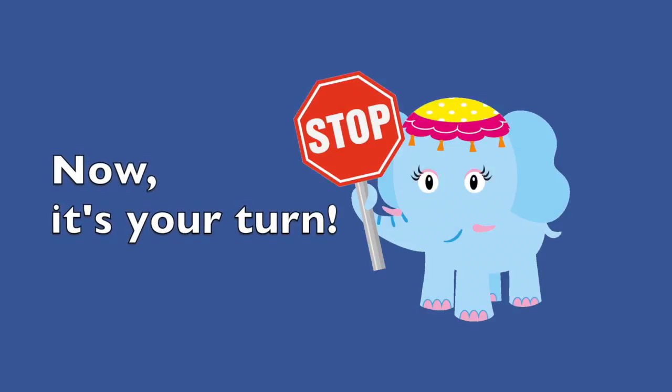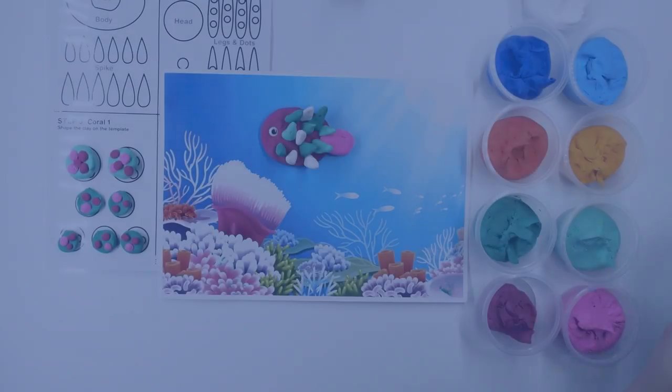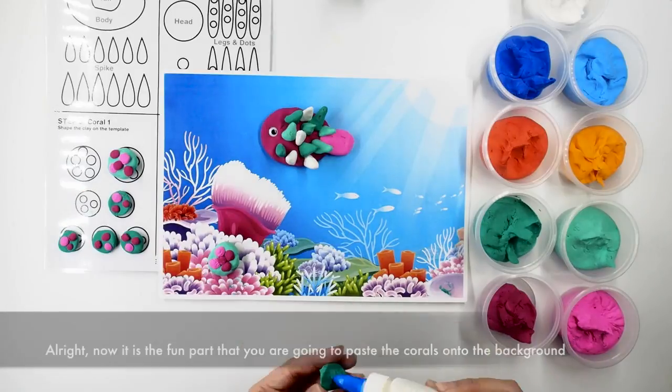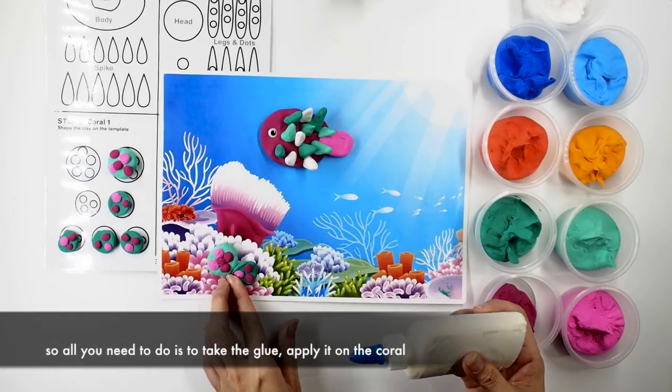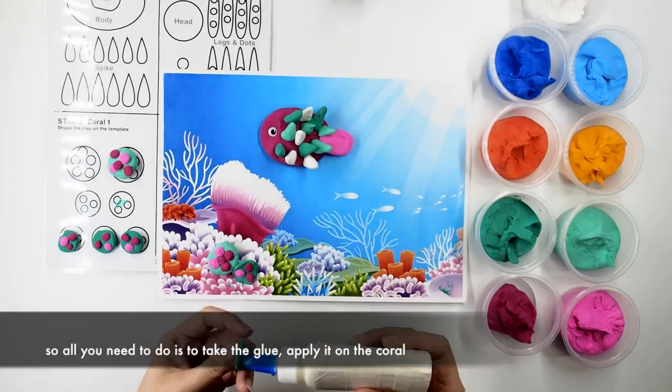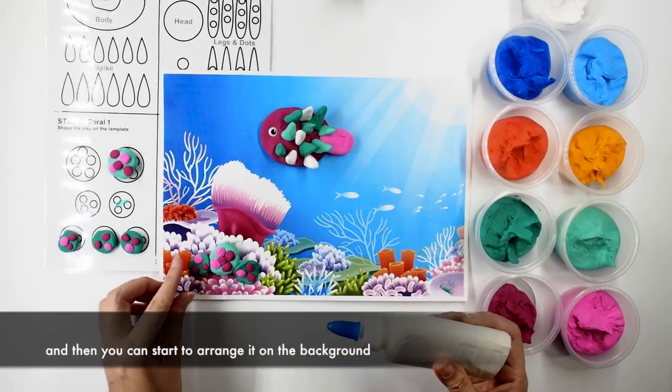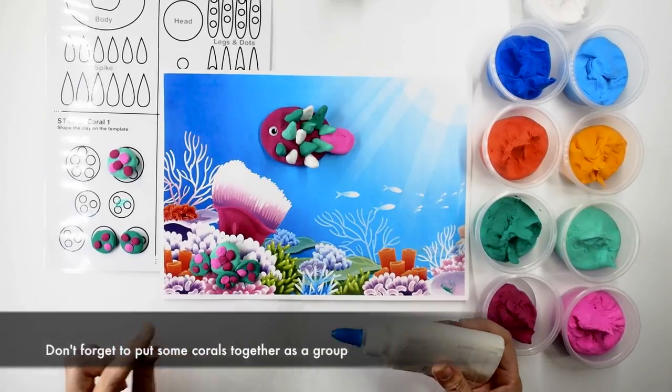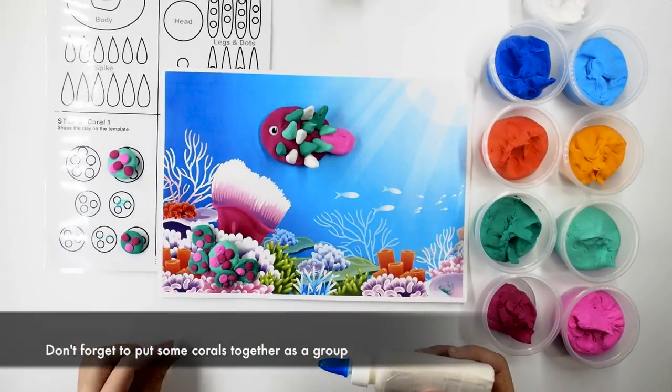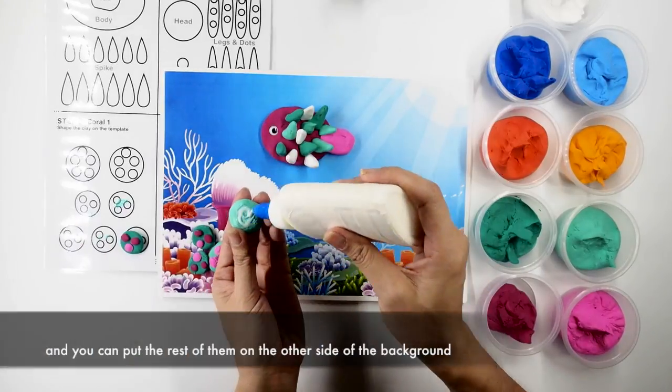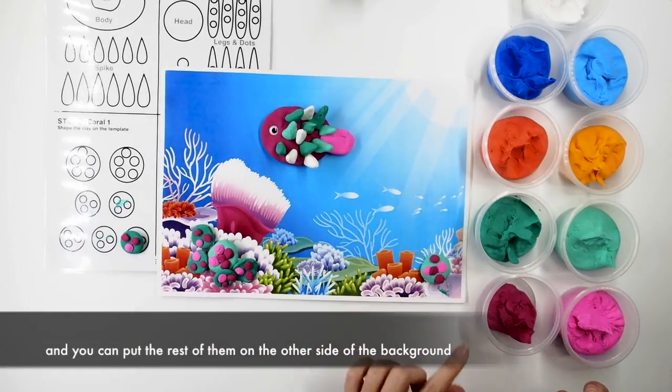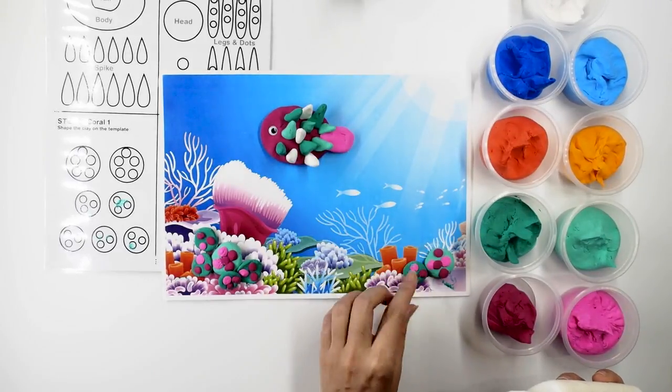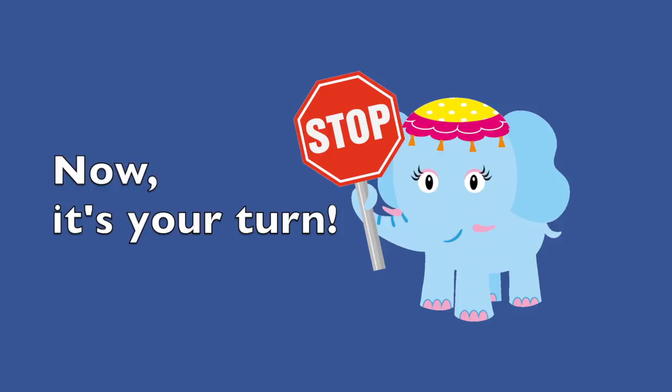Now it's your turn. All right, now it's the fun part where we're going to paste the corals on the background. So all you need to do is take the glue, apply it on the clay and then you can start to arrange it on the background. Don't forget to put some corals together as a group and you can put the rest on the other side of the background. Now it's your turn.